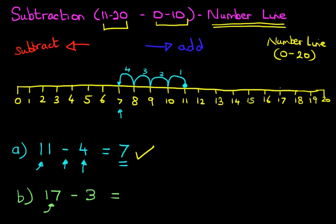Now, can you find number 17 on the number line? Have you found it? Great, it is over here. Let's put a nice big dot above it. Check the sign, it is minus, so that means we are going to the left. How many jumps are we going to take? Look at the question.